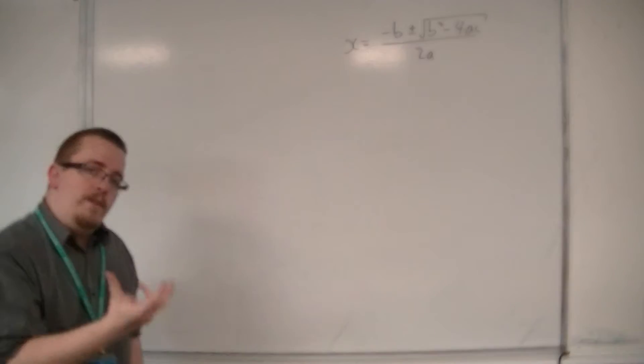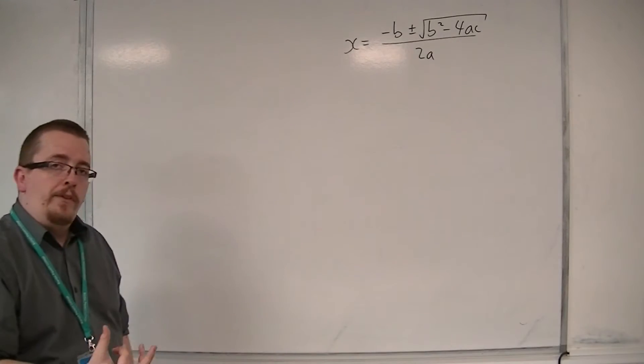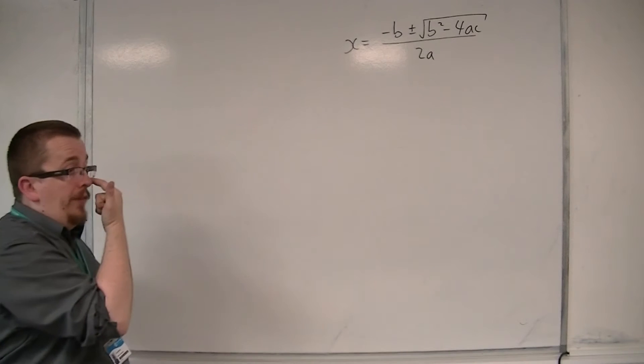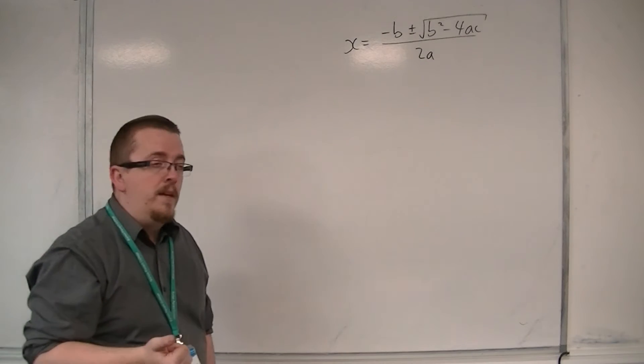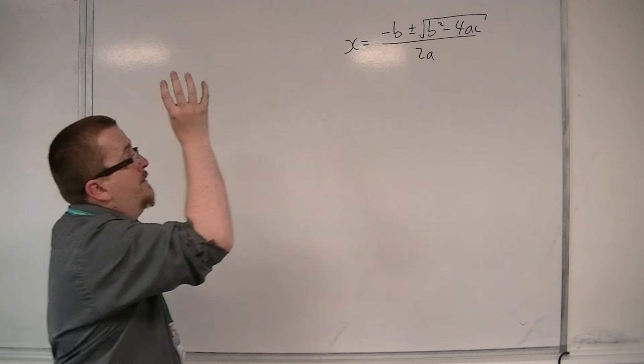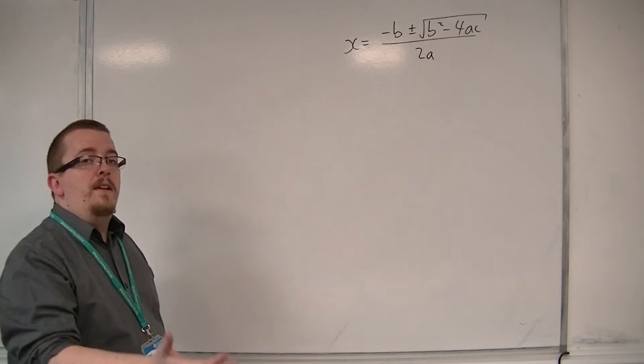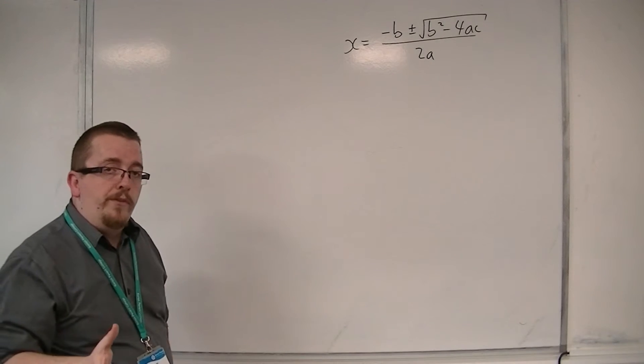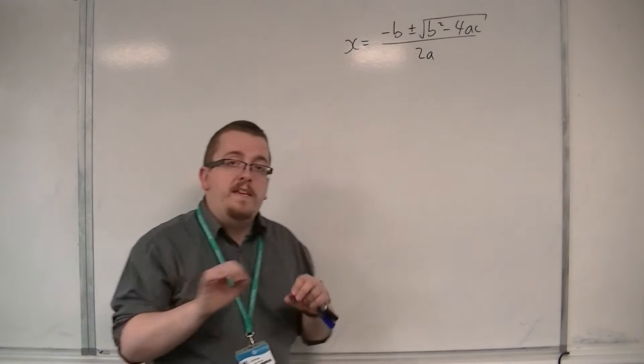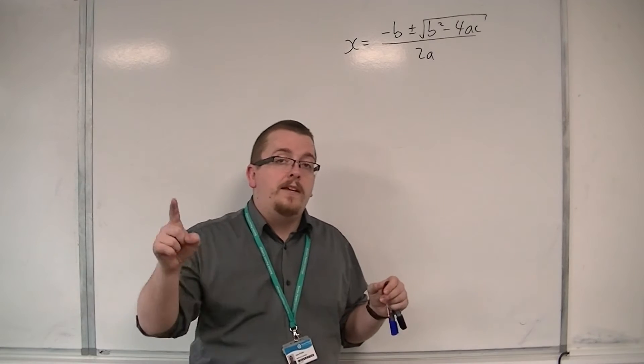It's that square root sign that limits the answers that you can potentially get. Because if the number below the square root symbol is negative, then you don't get any real roots. You don't get any values where the curve crosses the x-axis.